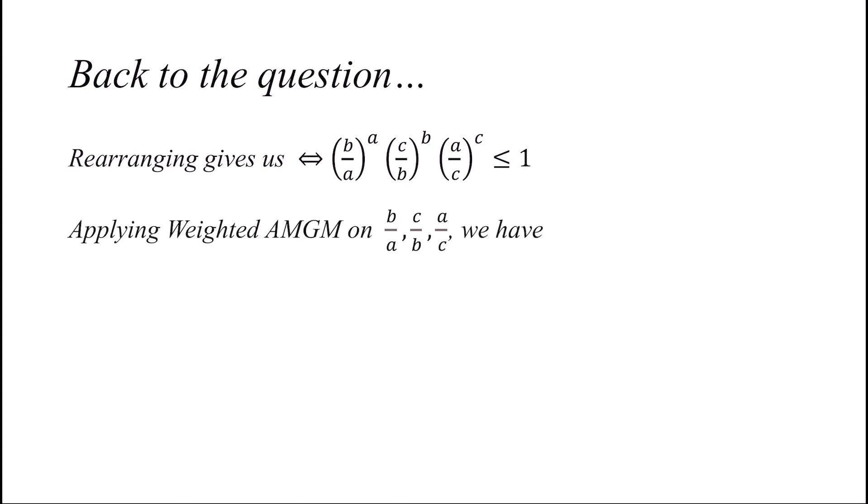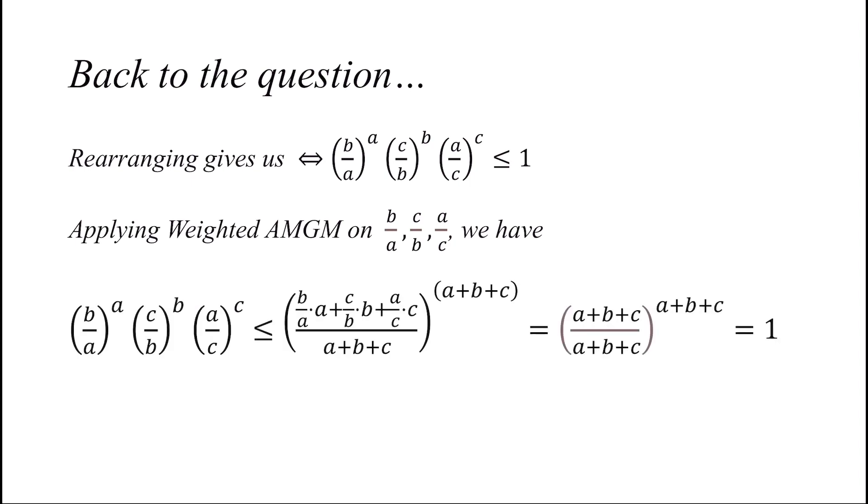Applying weighted AM-GM on b/a, c/b, and a/c, we have (b/a)^a × (c/b)^b × (a/c)^c ≤ ((b/a × a + c/b × b + a/c × c)/(a+b+c))^(a+b+c) = ((a+b+c)/(a+b+c))^(a+b+c) = 1.